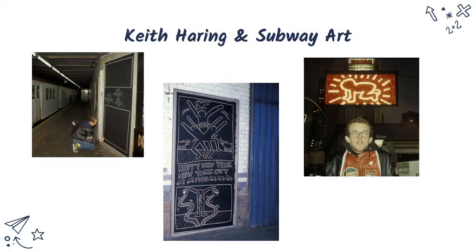You can see there's a picture on the left of him in the subway drawing on one of them. The middle shows a 1983 Happy New Year, New York City kind of thing. It did get people's attention — he became recognized, and art galleries started to want his artwork. In fact, some people would remove the entire ad off the wall and sell those, which is also illegal. And the picture on the right is an example of his artwork on one of the big TV screens up in Times Square.